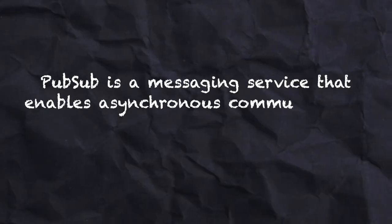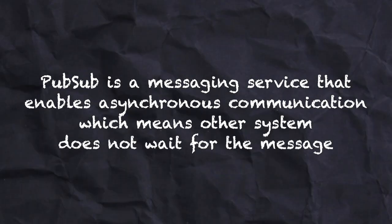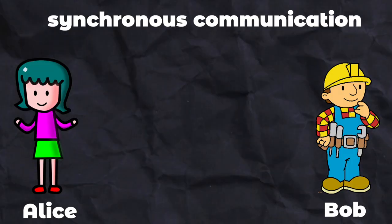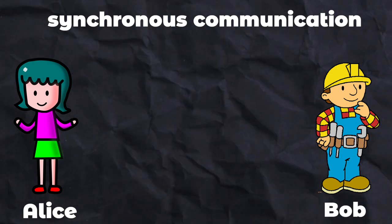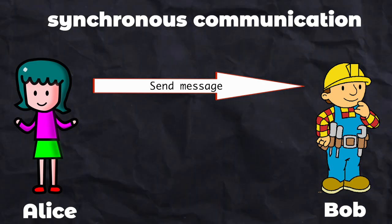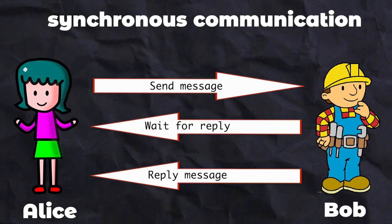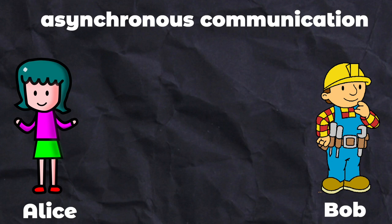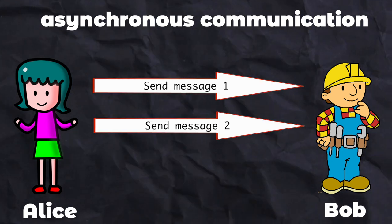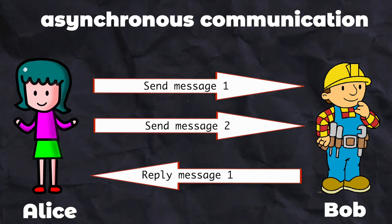PubSub is a messaging service that enables asynchronous communication, which means other systems do not wait for the message. In synchronous communication, Alice would send a message to Bob and wait for his response before proceeding with any other task, and Bob would also wait for Alice's response. This is like a phone conversation where both parties need to be actively engaged. But in asynchronous communication, Alice sends a message to Bob and then continues with her own task without waiting for an immediate response — it is like sending an email. You send it and continue your work, and the response comes whenever possible.